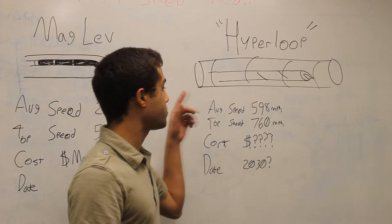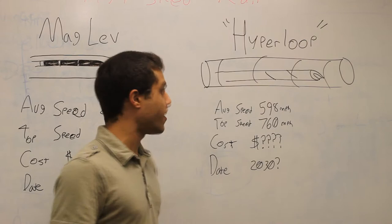Average speed should go about 598 miles an hour, and top speed is 760 miles an hour. That's ridiculously fast. That's even faster than actual planes.